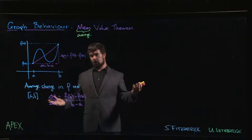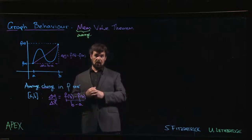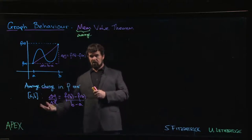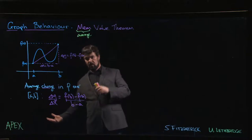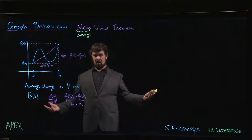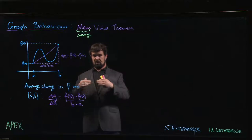What the Mean Value Theorem is saying is that if you average 100 kilometers per hour over your trip, there must have been some time during the trip when you were going exactly 100 kilometers an hour. There will be some times where you're going slower than that and sometimes where you're going faster.